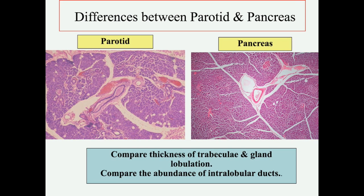How to differentiate between the parotid and pancreas under the microscope: in the parotid you can see clearly the presence of intralobular ducts — these wide-lumen structures are intralobular or striated ducts. In the pancreas these ducts are not present. Also, the parotid has thick connective tissue trabeculae and well-demarcated lobulation, while the pancreas has thin connective tissue trabeculae and ill-defined lobulation.